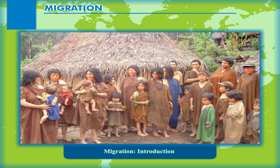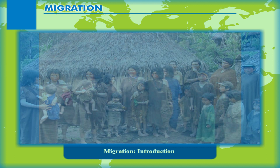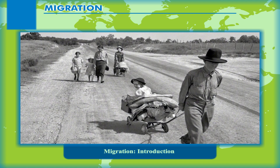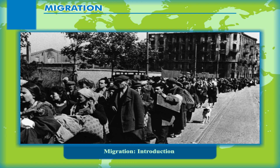Among the earliest migrations were the spontaneous resettlements of ancient tribes which took place throughout the world. These settlements, which lasted for thousands of years, were accompanied by the peaceful development of new territories. Later, as the primitive communal system declined, production developed and the population grew, mass movements of people took place as a result of clashes between tribes.